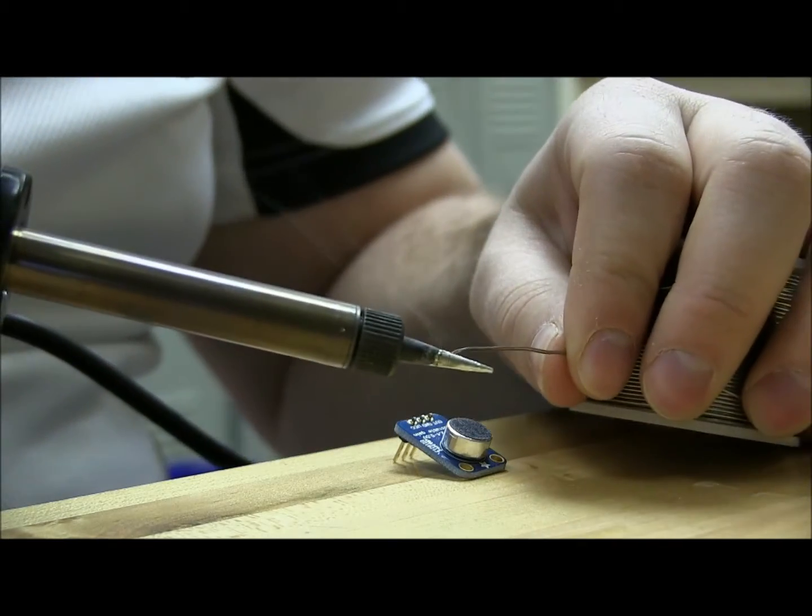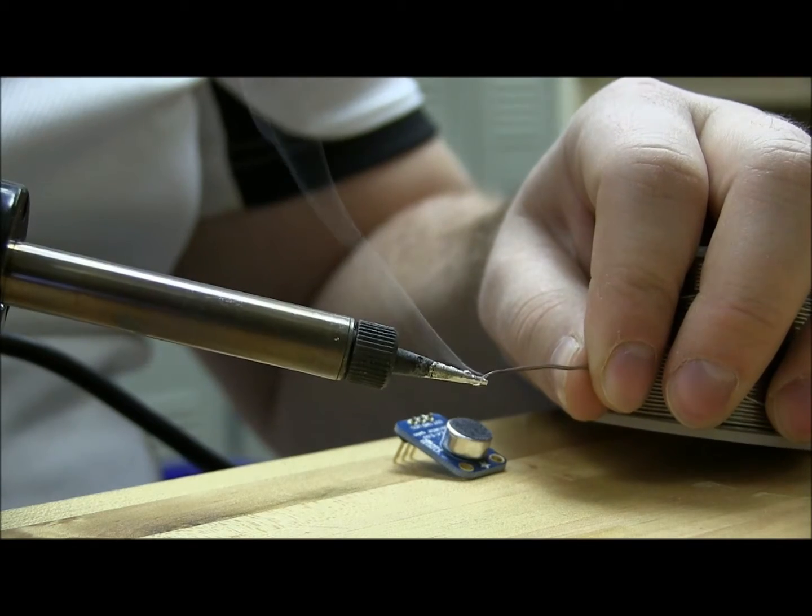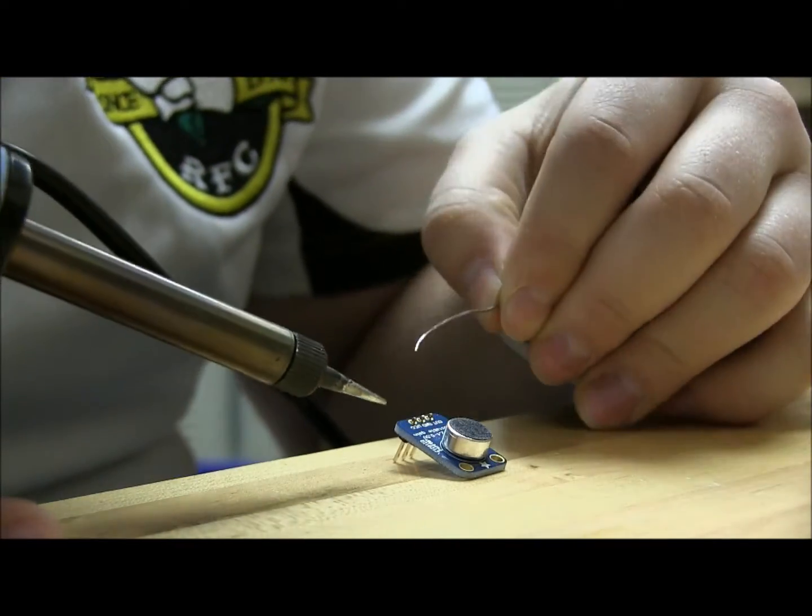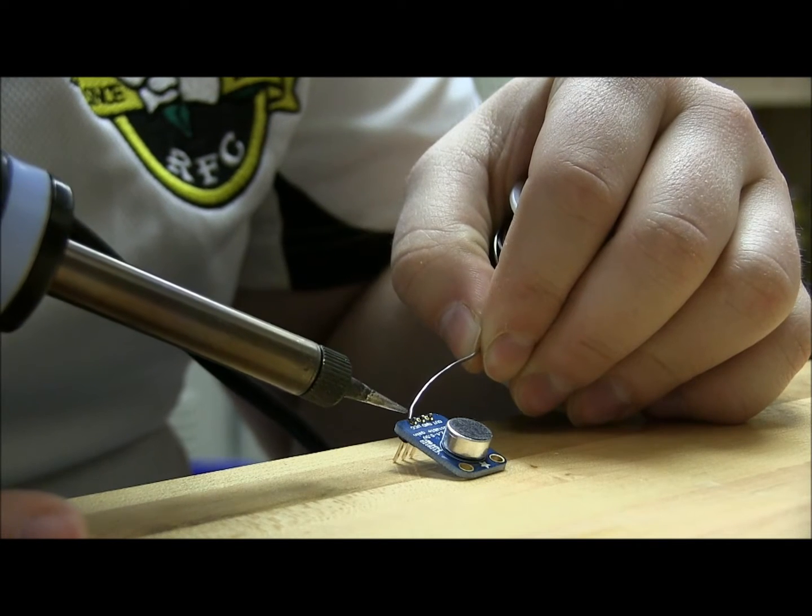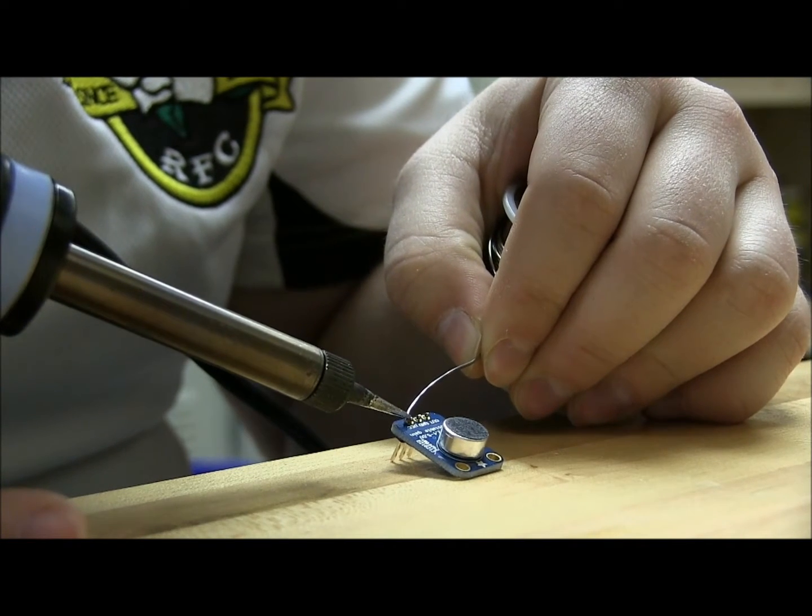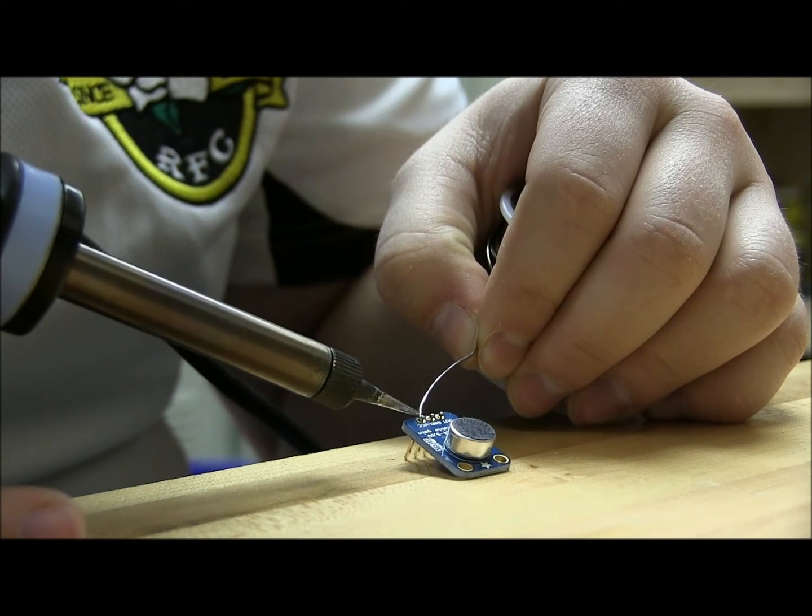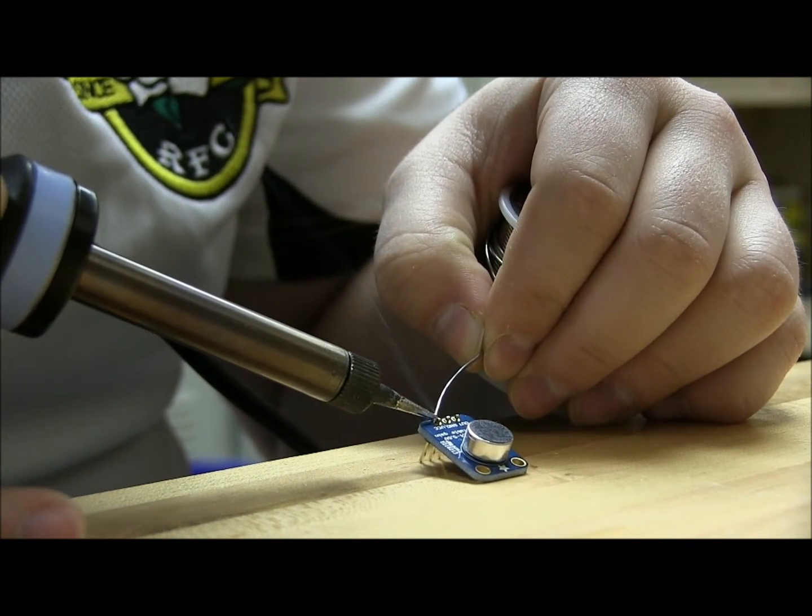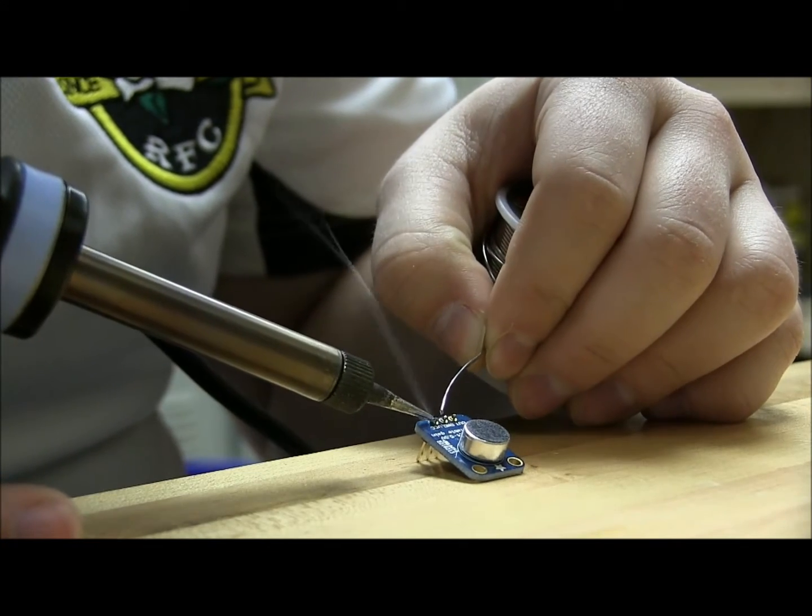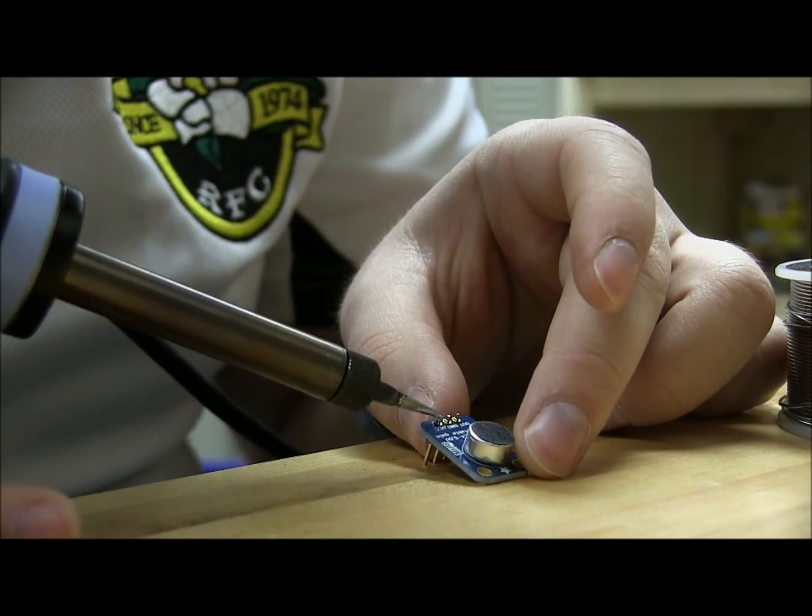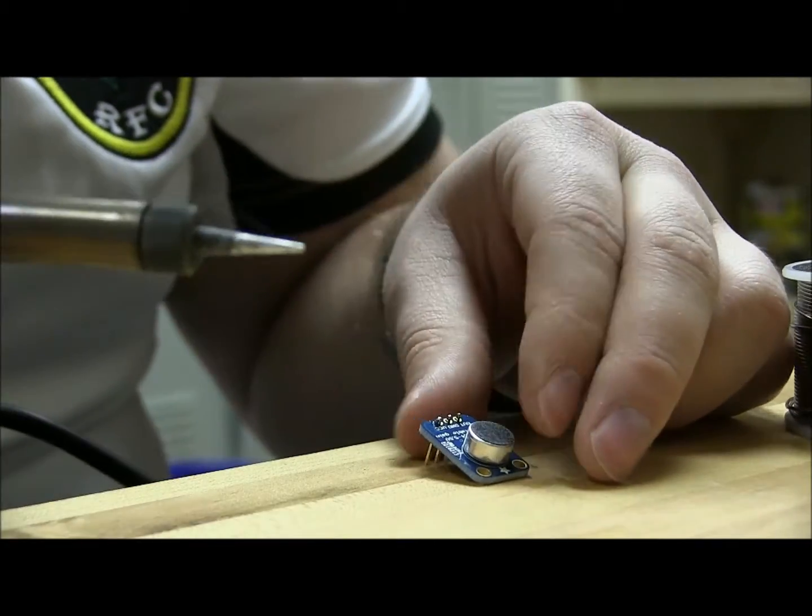And also we want to try not to bridge any of the pins, so if you see here they're all really close and you don't want the solder to combine two of the pins, our microphone won't work properly anymore. Once your solder gun is heated up, solder will melt on the end, make sure you clean it off properly. And the way you do this is you touch the end of the solder to where you want to go